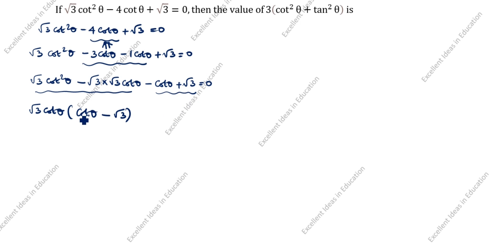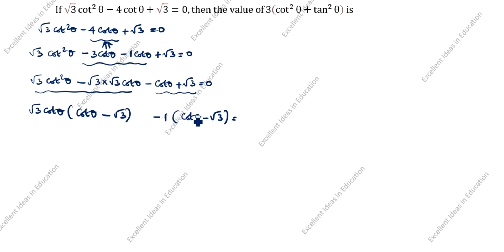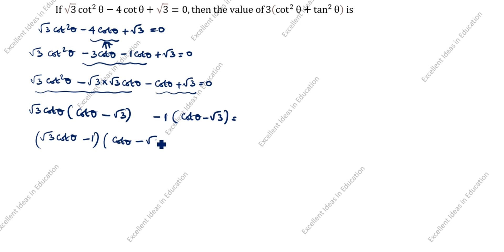Here is cot theta minus root 3, and here also cot theta minus root 3. Here is plus. Minus into minus is plus, so here is 1. Next: root 3 cot theta minus 1, multiplied by cot theta minus root 3, is equal to 0.